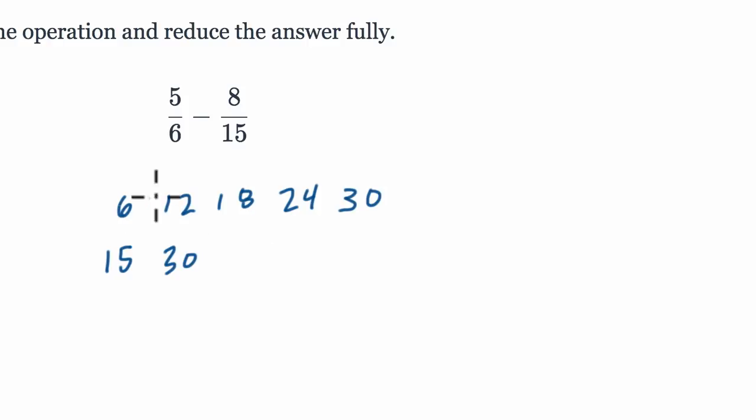So for example, the 1, 2, 3, 4, 5th multiple of 6 is 30. The second multiple of 15 is also 30, so these multiples are equal at 30.